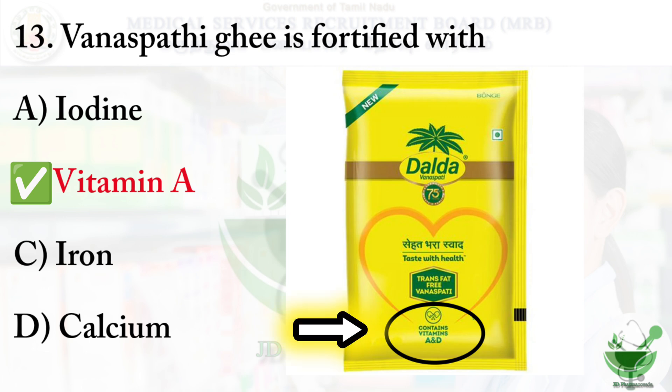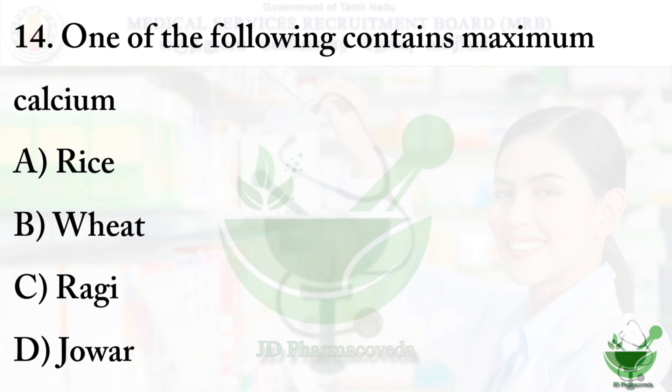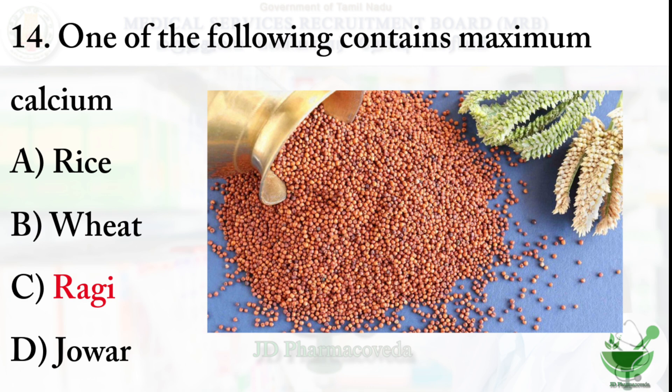Question number 14: Which of the following contains the maximum calcium? Options are: A) Rice, B) Wheat, C) Ragi, D) Jowar. The correct option is C — Ragi. Ragi contains 344 milligrams of calcium per 100 grams.